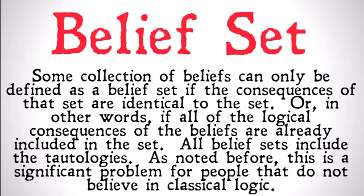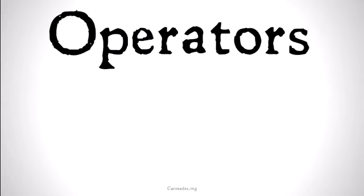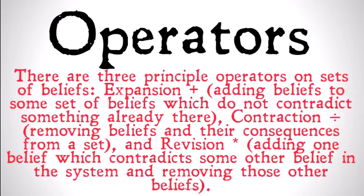The operators used for belief revision logic are generally three. The three main ones are: Expansion — adding beliefs to some set of beliefs which do not contradict something already there, and this is the simplest of the operators. Contraction — removing beliefs and their consequences from a set. And Revision — adding one belief which contradicts some other belief in the system, and removing those other beliefs that don't mesh with it to keep the system coherent. Next we'll look at each of these operators in turn.